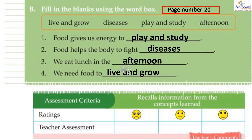Now on the same page number 20, worksheet 4.1 B — fill in the blanks using the word box. In the box you can see four words: live and grow, diseases, play and study, and afternoon. The first sentence is: food gives us energy to dash — you have to write play and study: P-L-A-Y, and S-T-U-D-Y.